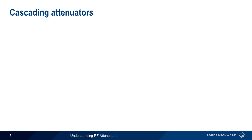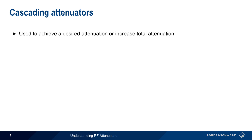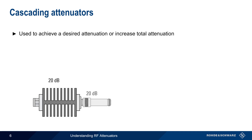Now let's come back to cascading attenuators — that is, connecting them in series. This can be used to achieve a desired non-standard attenuation value, or to increase total attenuation. For example, we could connect two 20 dB attenuators in series to achieve a total attenuation of 40 dB. When connecting attenuators in this way, the total attenuation is the linear sum of the individual attenuations in dB.